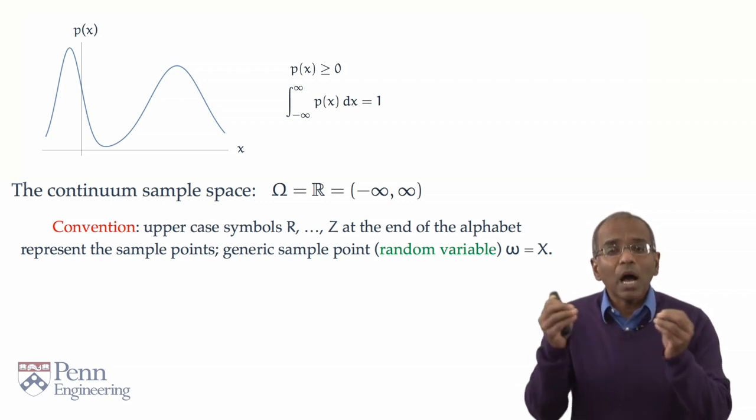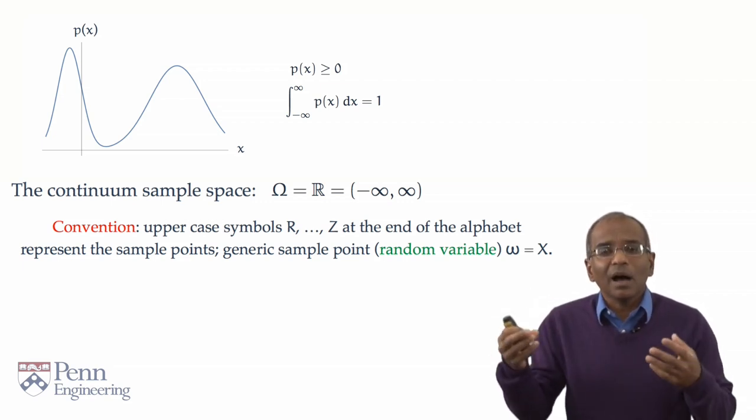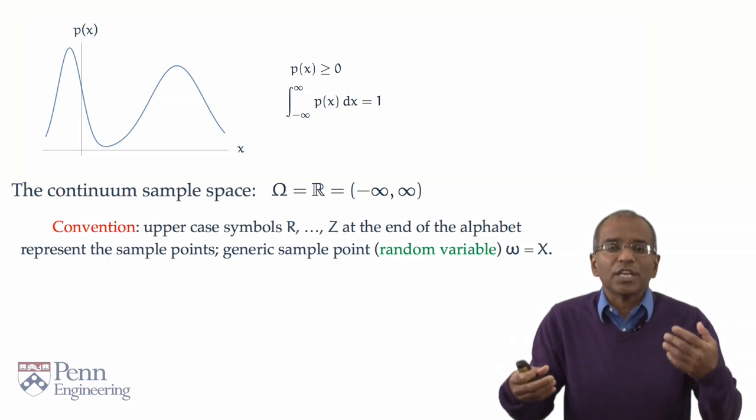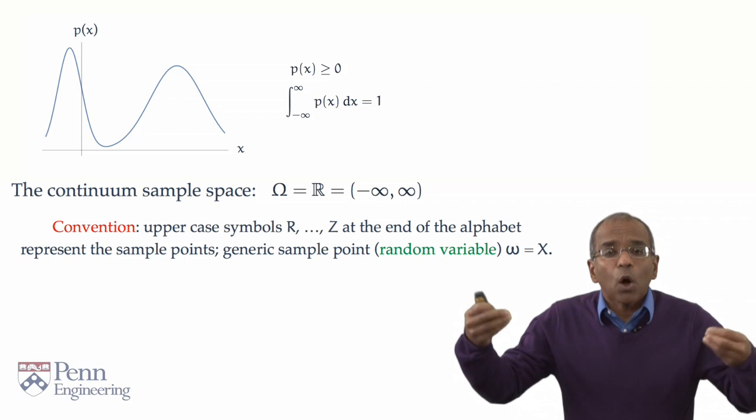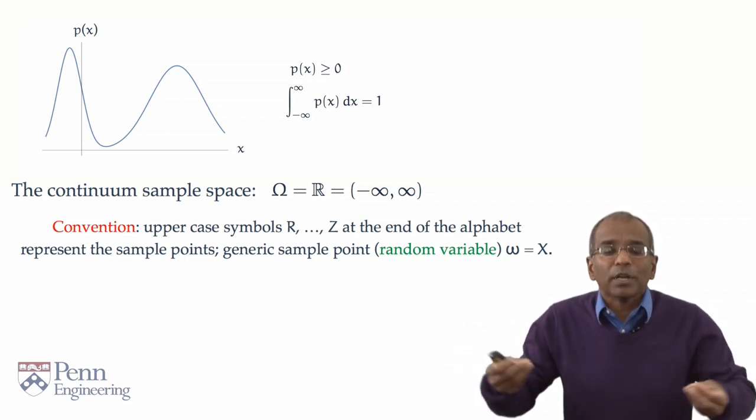we use uppercase letters, typically R, S, T, U, V, W, X, Y, Z, to represent chance outcomes which are numerical.